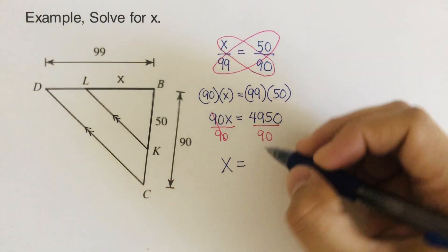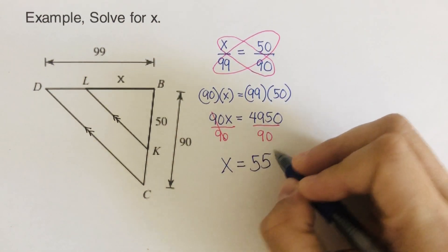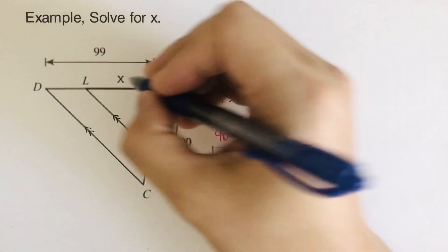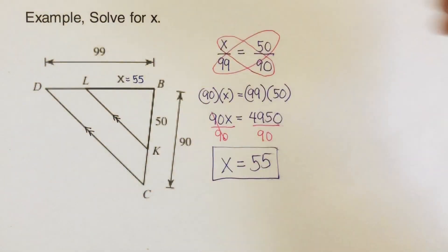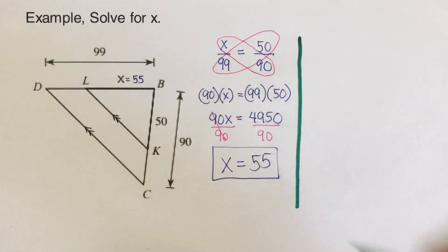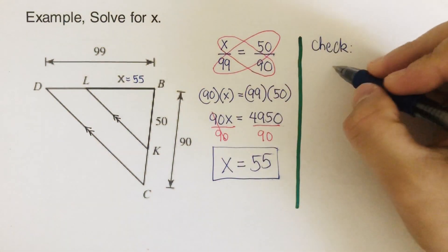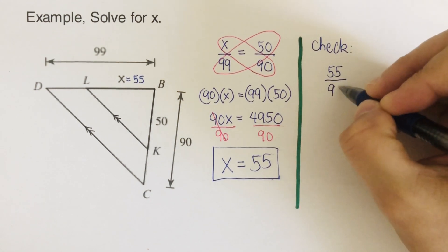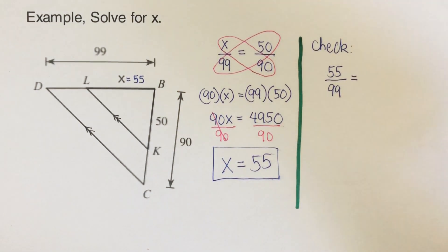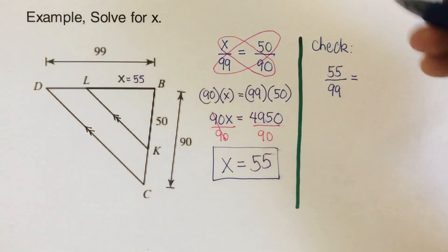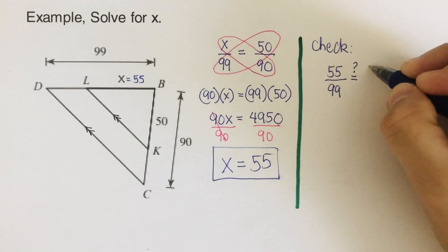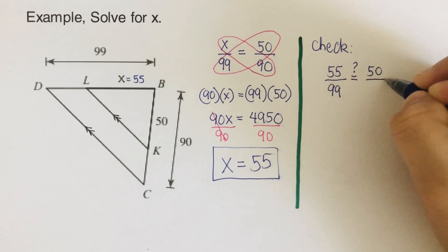We cross the 90 out, so X equals 55. This length right here is 55. Now let's check if we got those two fractions equal to each other. So we have 55 over 99 — is that equal to 50 over 90?